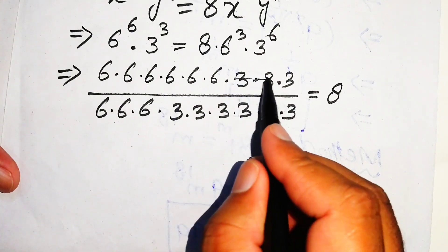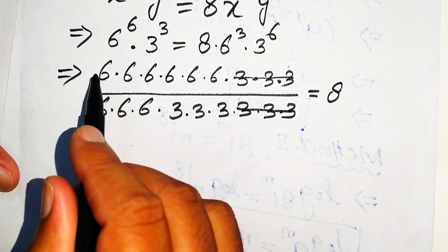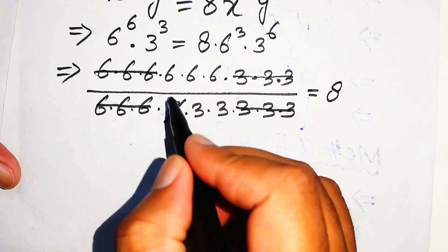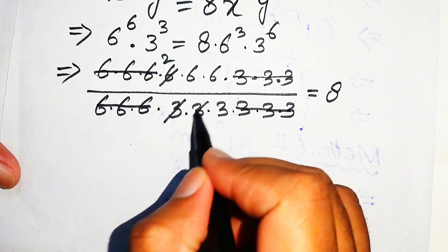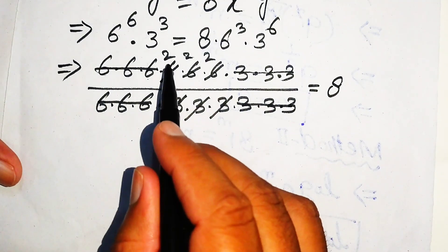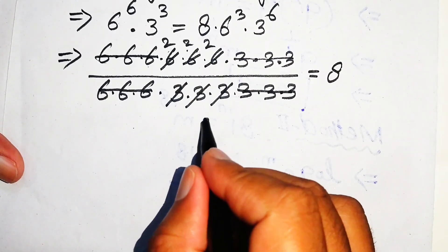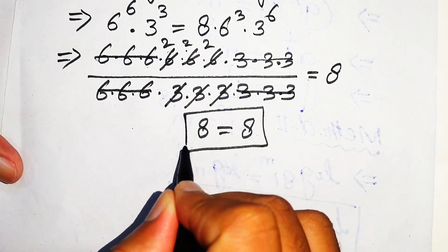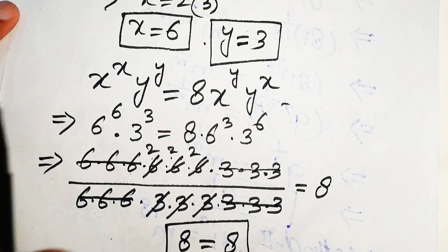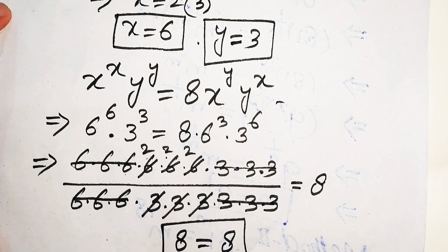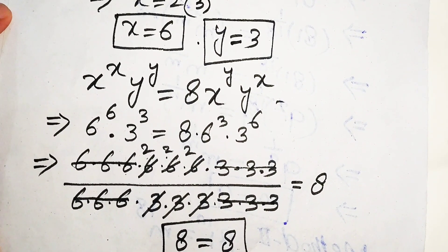After cancellation, what remains gives 2 times 2 times 2 equals 8, which equals 8. This confirms that x equals 6 and y equals 3 is the only integer solution. Thank you for watching this video — please subscribe to my channel for more videos.